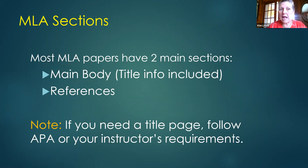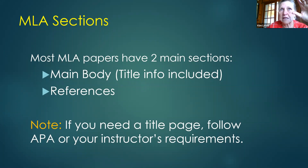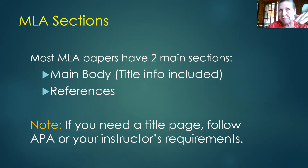Most MLA papers have two sections: the main body and the references. In the main body there's no title page — instead there's a heading at the top left with your name, class, and date, double spaced. Then a centered title. The reference section is called the works cited page.